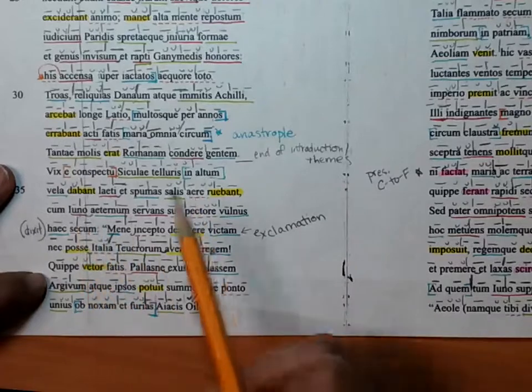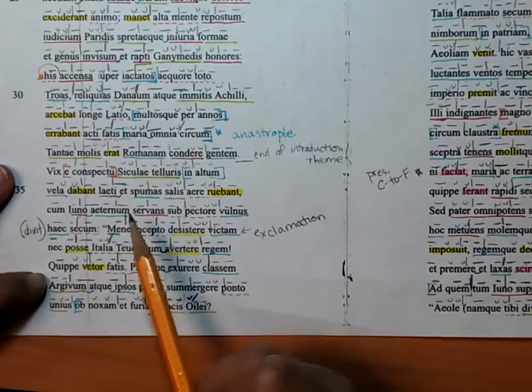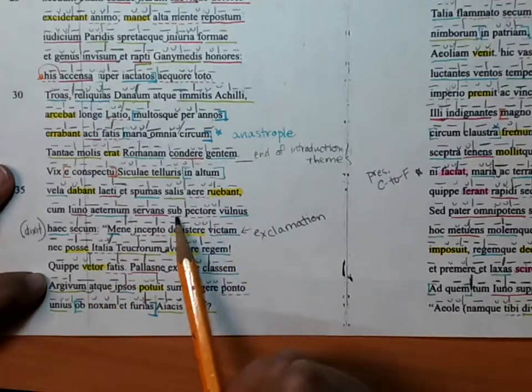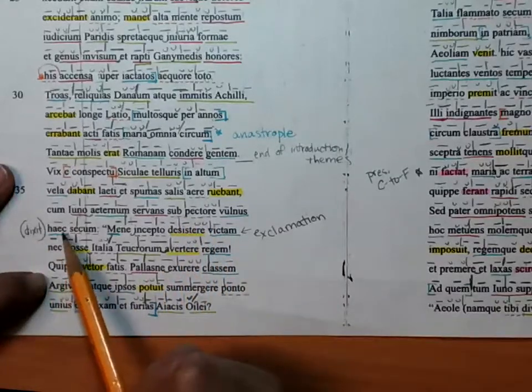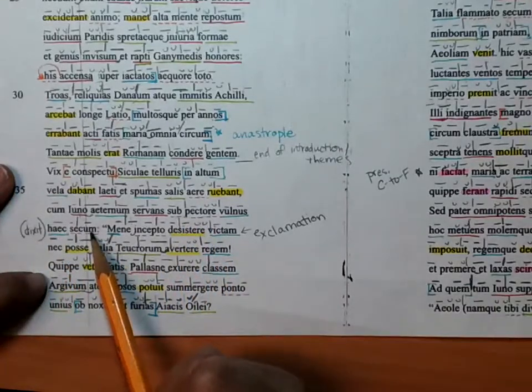When Juno, preserving the eternal wound under her heart, said these things with herself, we would say to herself.